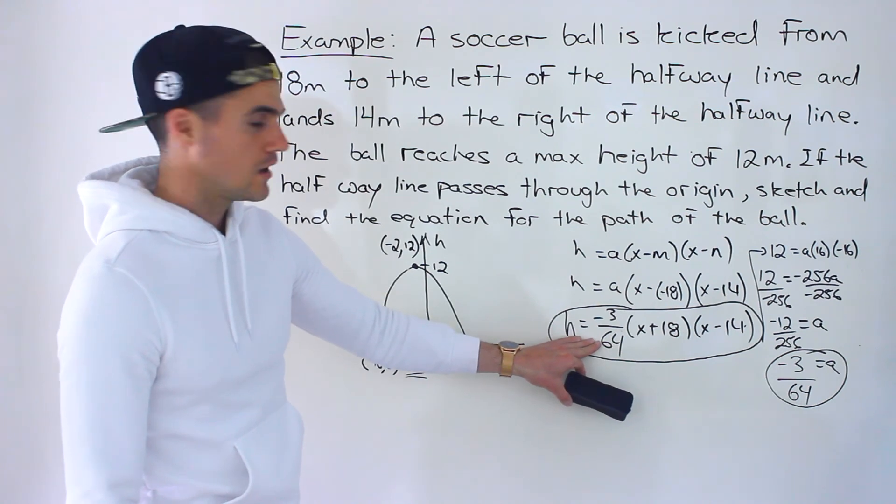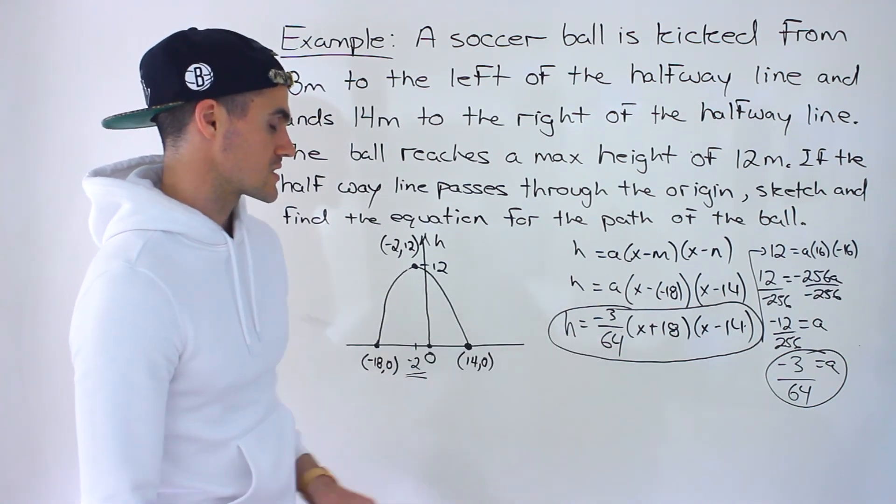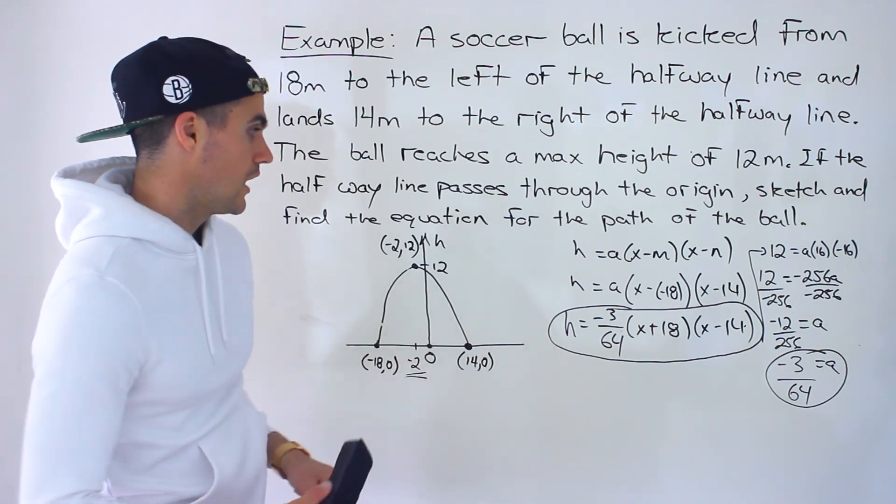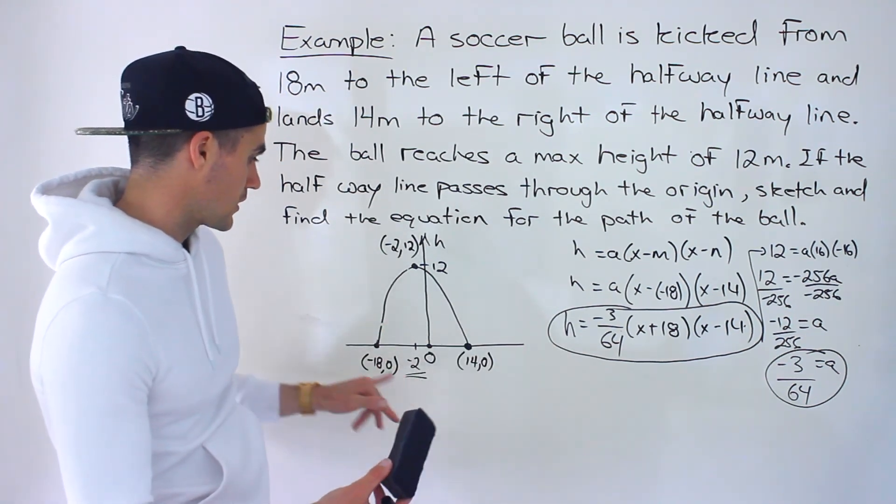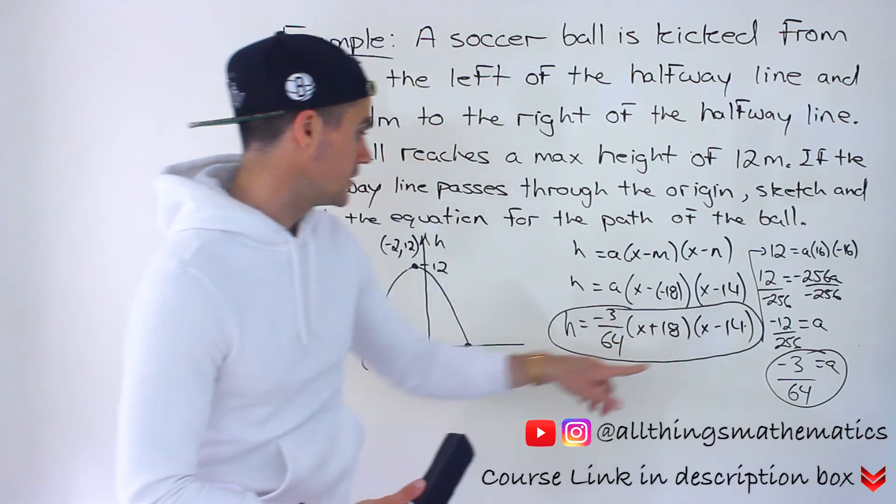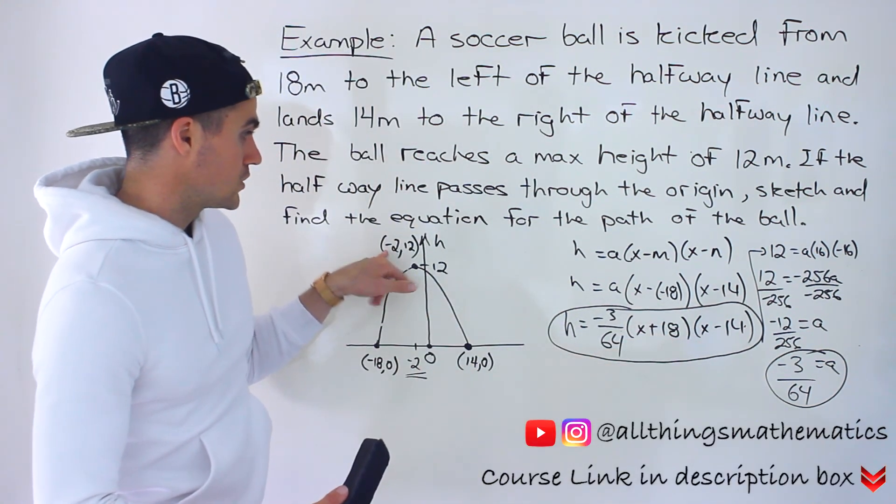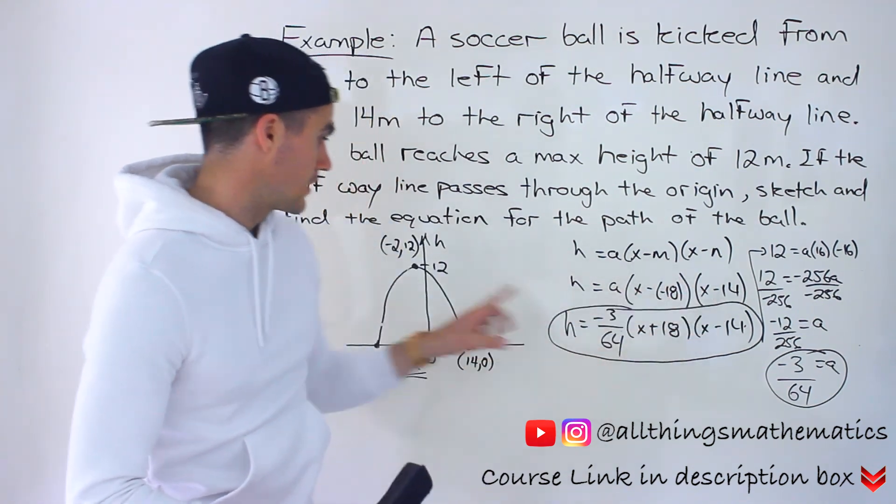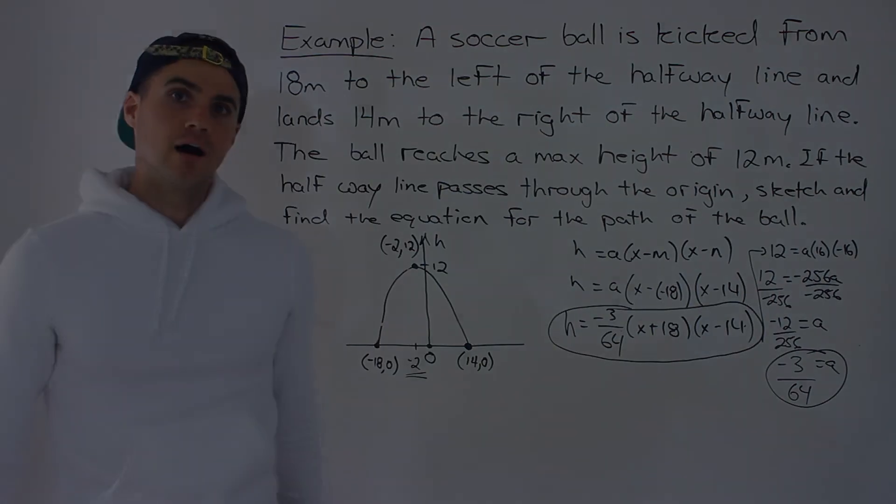You can also keep it as a fraction. That's the equation of this here. If you want to do a quick check, notice the intercepts, negative 18 and positive 14. We could tell that that's all good. If you want to check this point, you could plug in negative 2 for x, multiply everything, and you would get a height of 12.